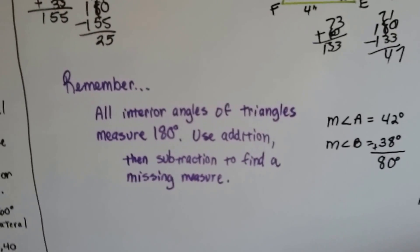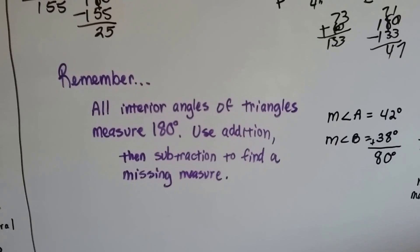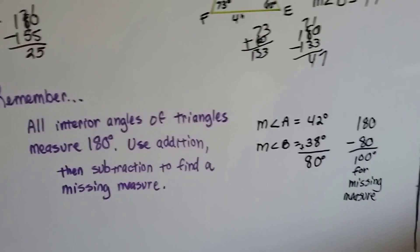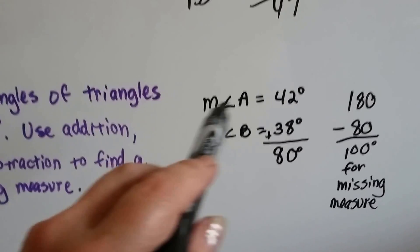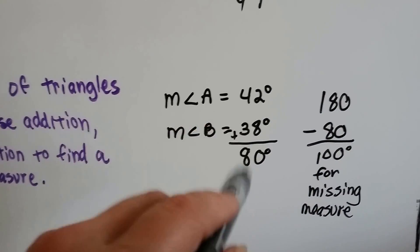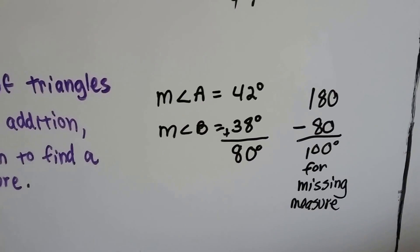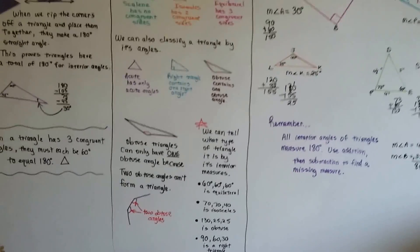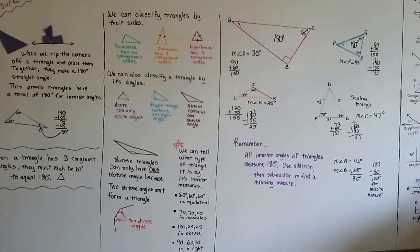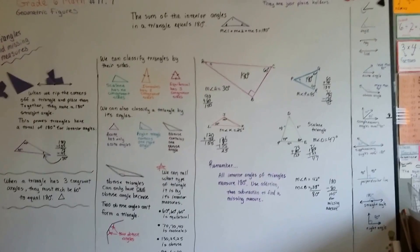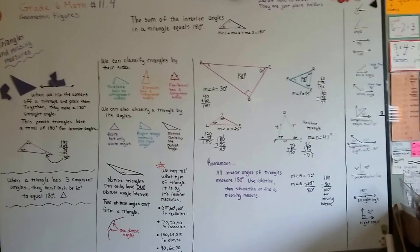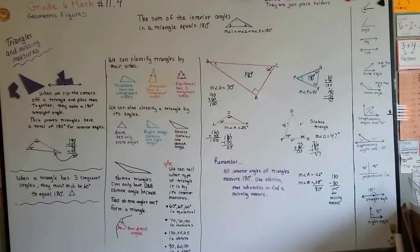So remember, all interior angles of triangles measure 180 degrees. We use addition. We add up the two measures and then subtract that from the 180 to find the missing one. If we know one measure is 42 degrees and another one is 38, we add them together and subtract it from the 180 and then we know that the missing angle is 100 degrees. They're all 180 degrees. It doesn't matter what the triangle looks like. The interior measures are 180 degrees. So you should be able to find the inside measures of a missing angle, right? All right. We're going to talk about quadrilaterals next. I'll see you there.